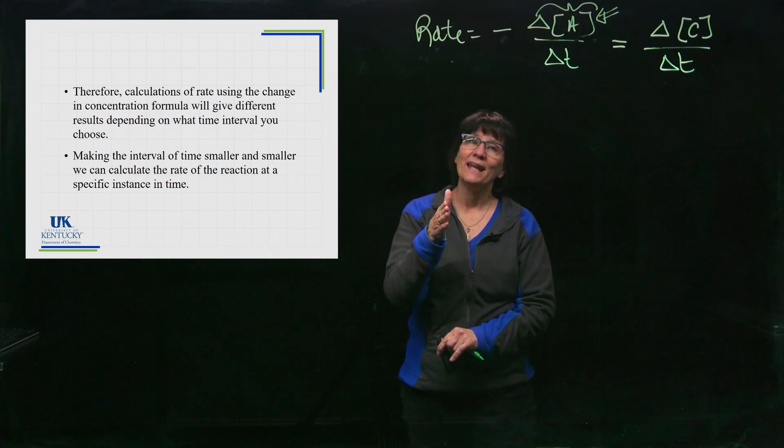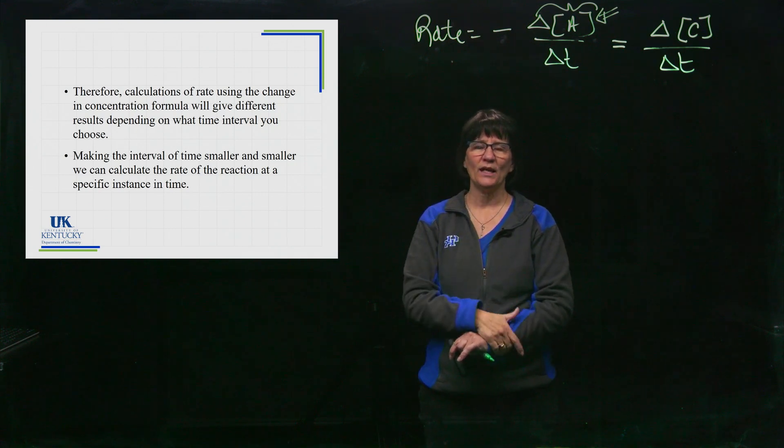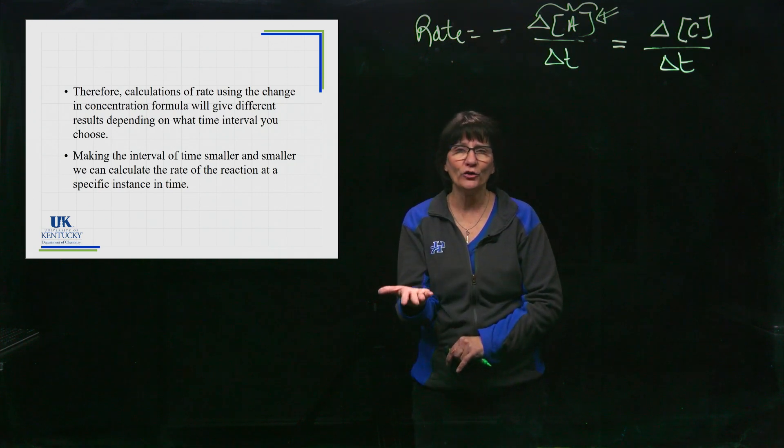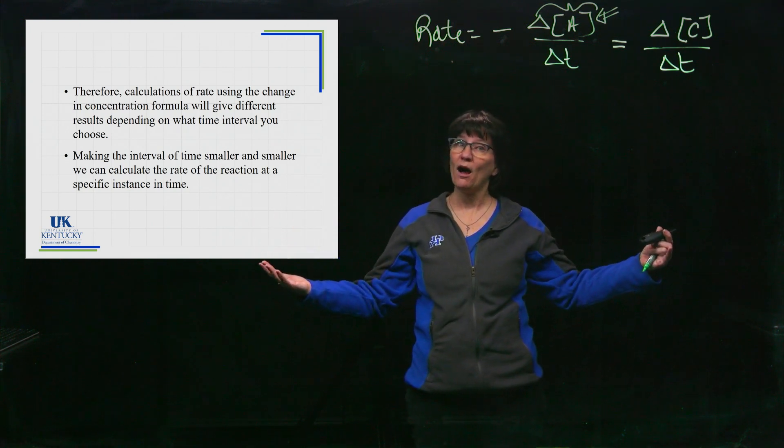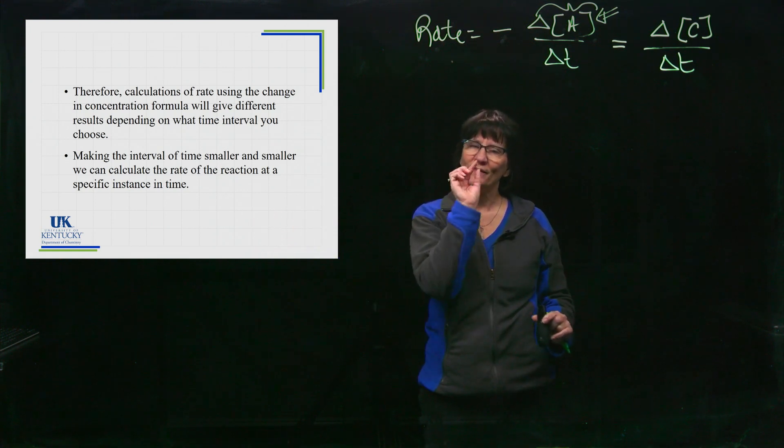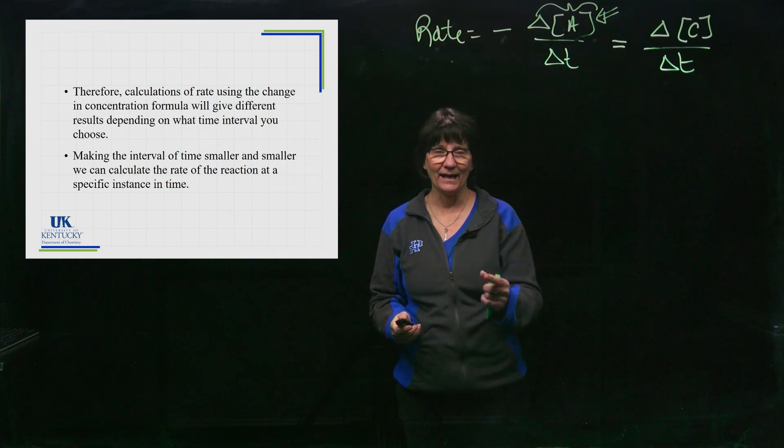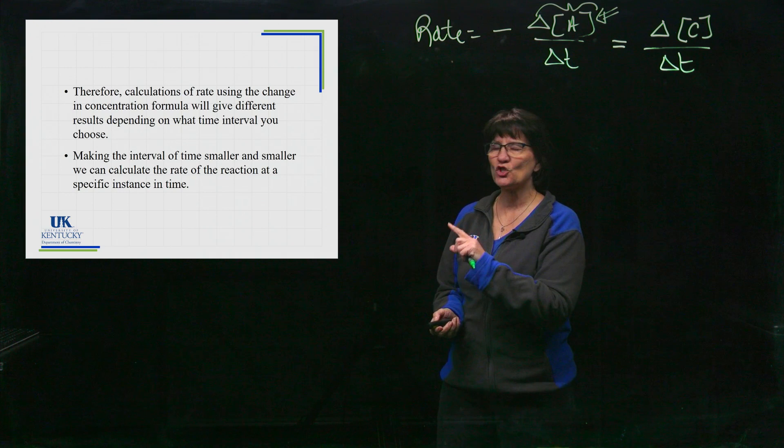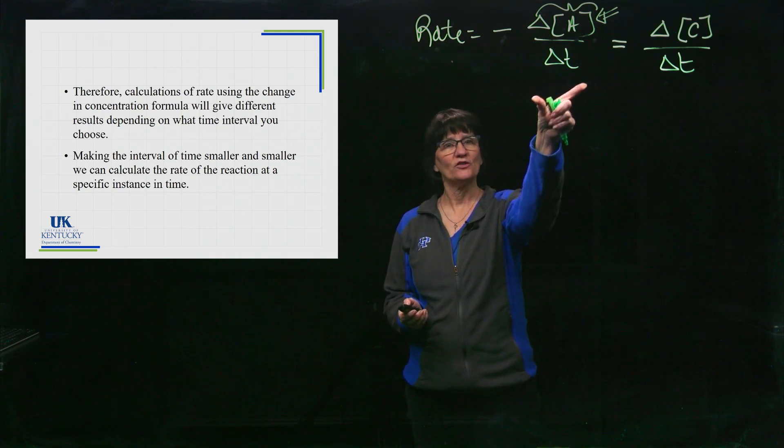But when a police officer pulls you over and says you're going 95 miles an hour right now, he is doing an instantaneous reading of your time. You can't argue to him that on average over the whole course of this trip I'm only going 70, therefore I'm okay, officer. He's going to say no, at this instant when my radar hit you, I know that you were going 95.